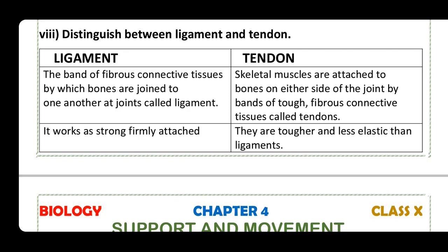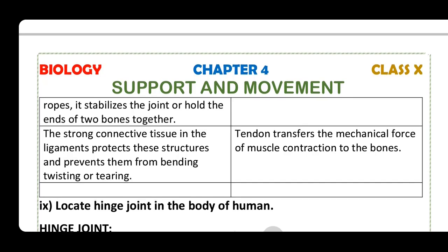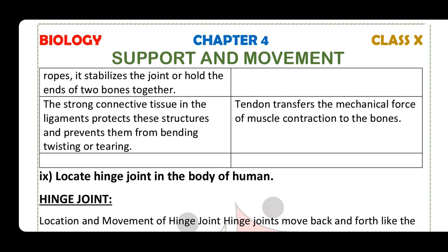Ligaments work as strong, firmly attached structures. Strong connective tissue in the ligament protects these structures and prevents them from bending, twisting, and tearing. Tendons are tougher and less elastic than ligaments.